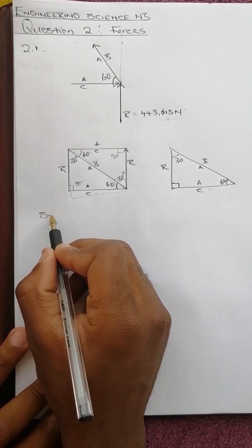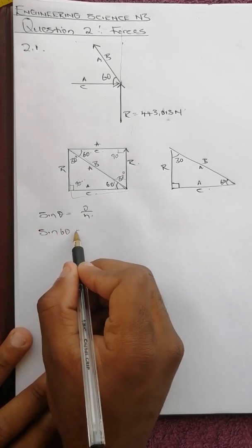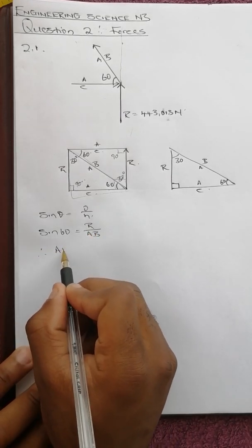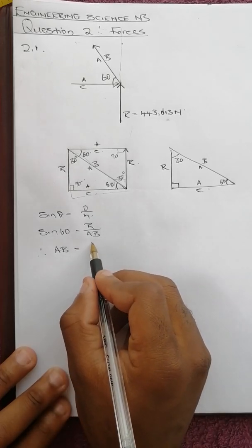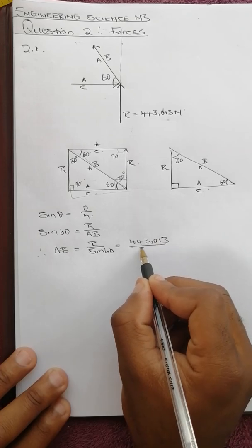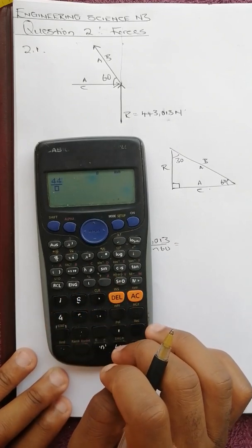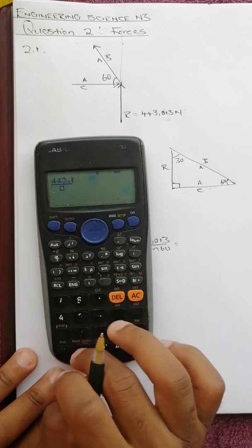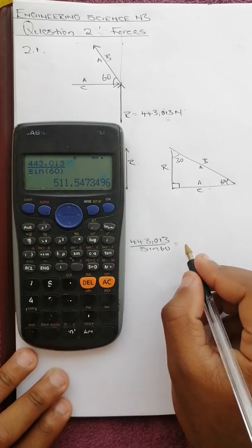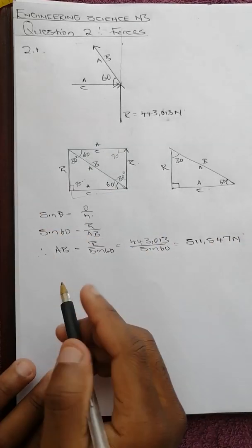Since this is a right angle we can use trig ratios. Sine theta equals opposite over hypotenuse, so sine 60 equals AB over R. Therefore AB equals R divided by sine 60, which is 443.013 divided by sine 60, giving us 511.547 newtons.